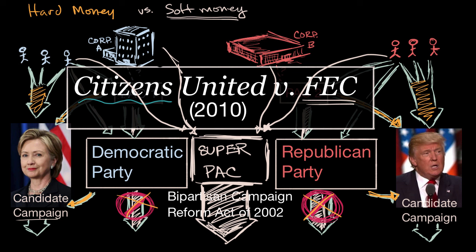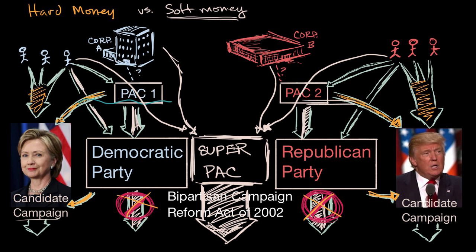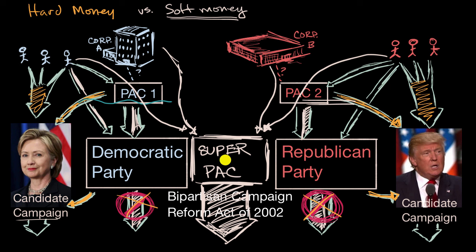The key difference between a super PAC and a regular PAC is that regular PACs have limitations in terms of how much money people can donate to them — they actually can't take direct money from the treasuries of a corporation or a labor union — and they had limitations on how much they could donate to an individual campaign, though they could donate to a campaign. A super PAC, on the other hand, can take unlimited amounts of funds from individuals, from other PACs, and directly from corporate treasuries themselves, and as long as they are independent of the candidates' campaigns and don't coordinate with them, they can spend as much money as they would like.